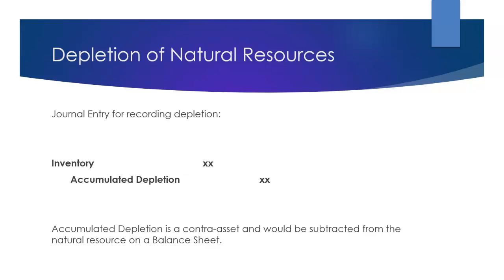Let's talk about inventory real quick — why is inventory going up? Well, we now have more of that oil or more of that mineral because we have extracted it from the earth, so that inventory is going up. We also need to show that we are depleting that natural resource, and that's why we include this contra asset.